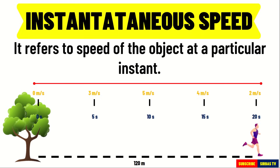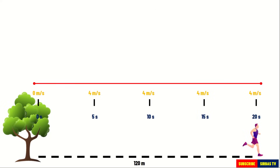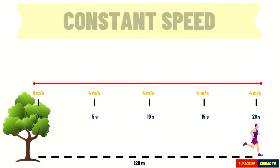For example, what is the instantaneous speed of Ian at 5 seconds? It is 3 meters per second. The instantaneous speed may be equal to, greater than, or less than the average speed. Take a look at the instantaneous speed of Ian in this case — they are always the same. When an object's instantaneous speed values are always the same, it means the object is moving with constant speed.